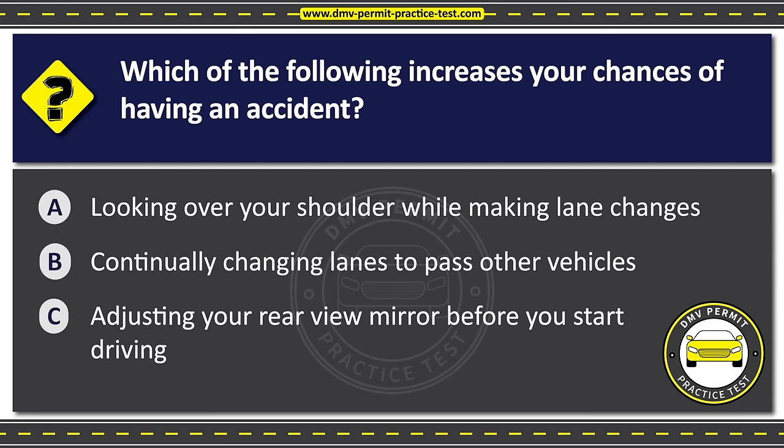Question forty-four. This warning sign means Option A: Road is slippery when wet. Option B: Winding road ahead. Option C: Road with sharp turns ahead. The correct answer is Option A: Road is slippery when wet.